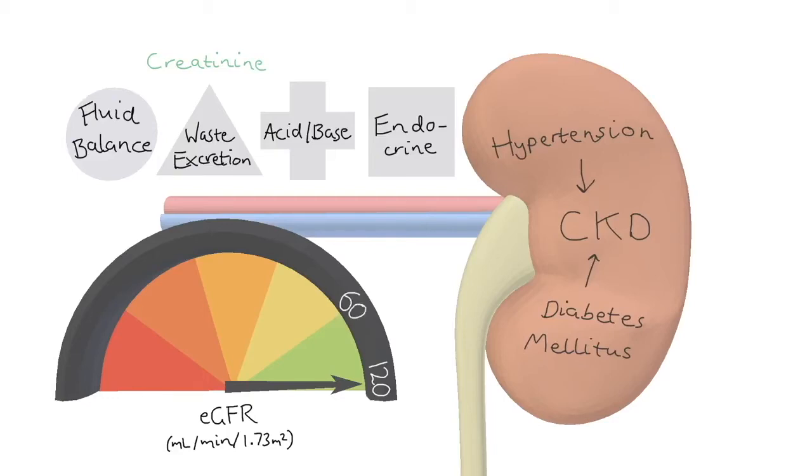GFR from 120 to 60 can be normal, but is classed as CKD stage 1 or 2 if any of the following is present: albuminuria, hematuria, pathological abnormality of the kidneys, or structural abnormality of the kidneys.